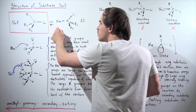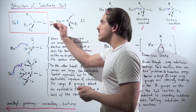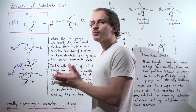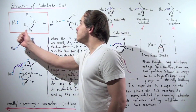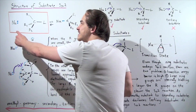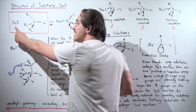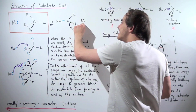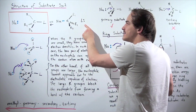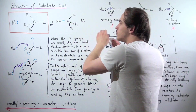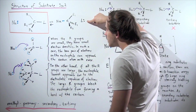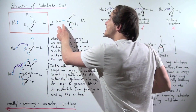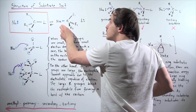Notice we have two arrows, one going this way and one going backward. That means our SN2 reaction is reversible. If we're going forward, this is acting as our Lewis base, our nucleophile. And if we're going backward, this is acting as the Lewis base, our nucleophile. When we go in reverse, this lone pair of electrons attacks this Lewis acid, this carbon atom, displacing this leaving group.